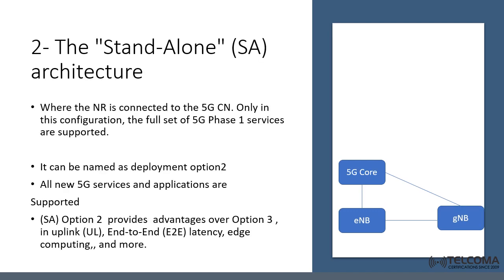The second deployment option recommended by 3GPP is option two, which is the standalone architecture and can be seen as a full 5G deployment. It doesn't need any part of the 4G network to operate. In this case, the new radio is connected to the 5G core network, and the full set of 5G services are supported. The target architecture for 5G migration is to use the standalone new radio and 5G core. Compared with non-standalone, the 5G standalone option two provides better enhancements in uplink, end-to-end latency, and edge computing, delivering much better user experience.